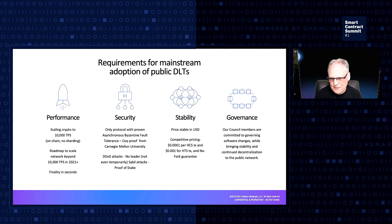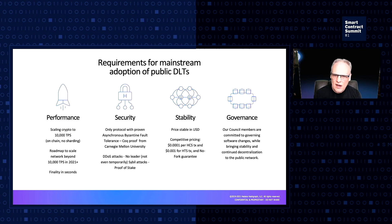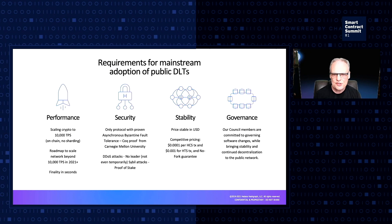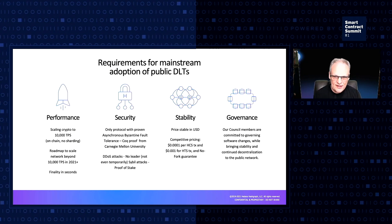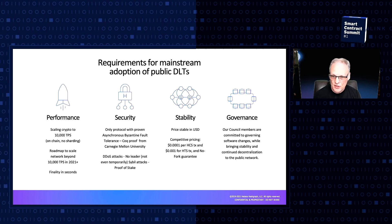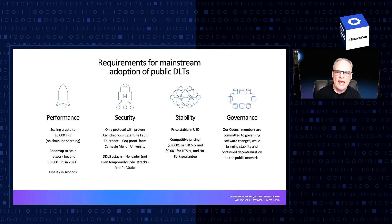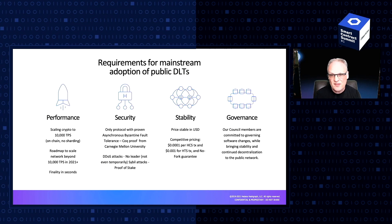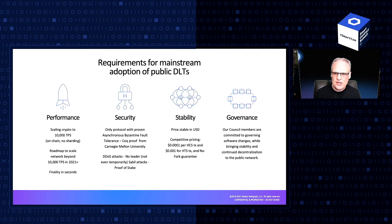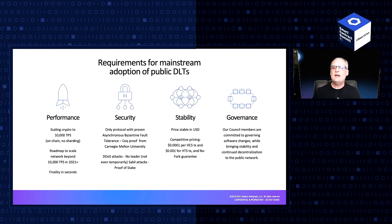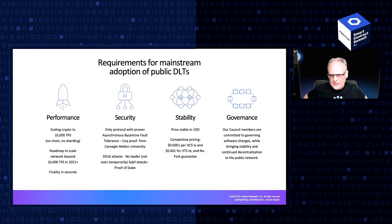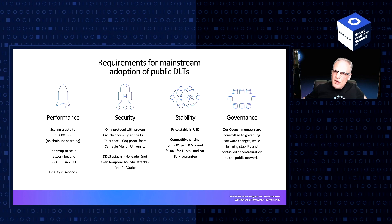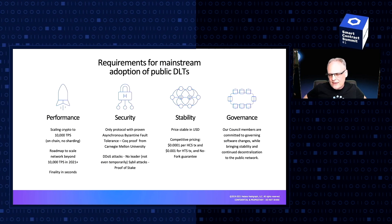When we talk about stability, specifically we're talking about stability in the costs per transaction. That's really important to developers building their applications on top of the platform who need to predict what their costs are going to be — they shouldn't be a function of any given token price. And the network is never going to fork or split into two competing networks. We've been able to provide strong guarantees, through both technical and legal means, that the Hedera network is never going to fork.